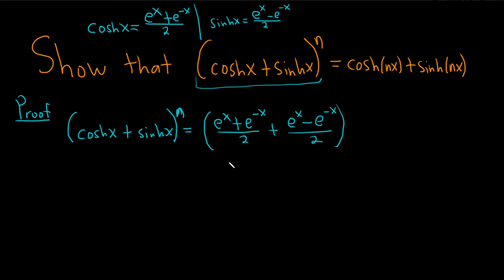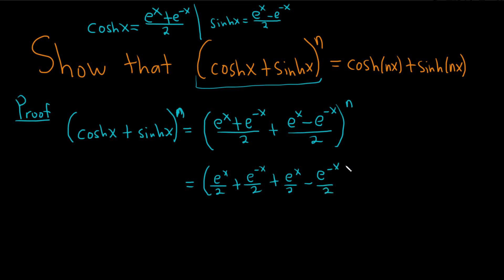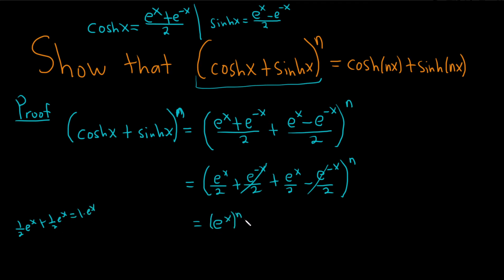And this is to the nth power. Let's break this up. This is: e to the x over 2, plus e to the negative x over 2, plus e to the x over 2, minus e to the negative x over 2 — all to the nth power. The negative x terms cancel, and we have e to the x over 2 plus e to the x over 2, which is 1 half e to the x plus 1 half e to the x, equal to 1 times e to the x. So this to the nth power gives us e to the nx.